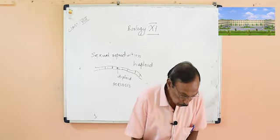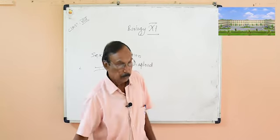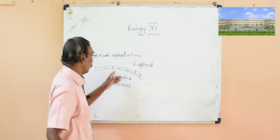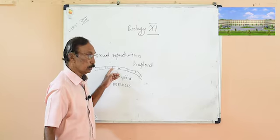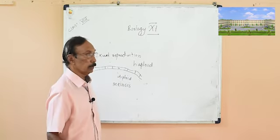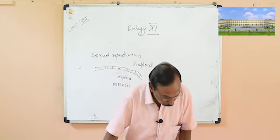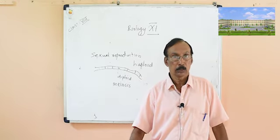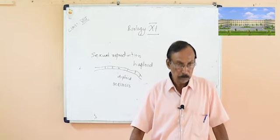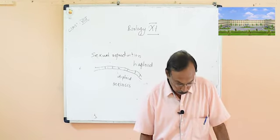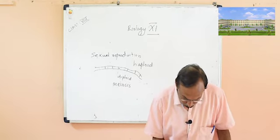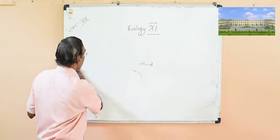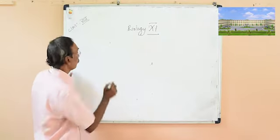In some cases, the two nuclei, when they come together, remain close to each other for a long time without actually fusing. This phase, where two nuclei coexist without fusion, is called the dikaryotic phase, and it is a characteristic of some fungi. There are different types of asexual and sexual reproduction in fungi, and we are going to divide fungi into groups.